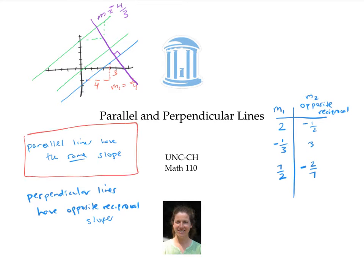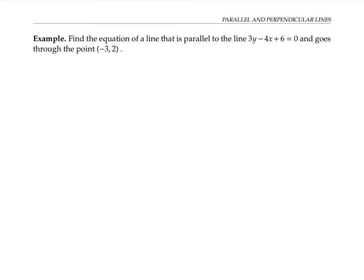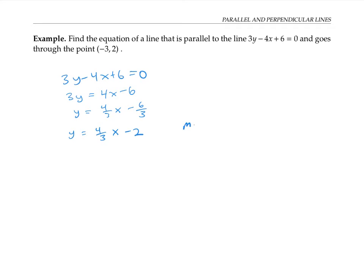Let's use these two principles in some examples. In our first example, we need to find the equation of a line that's parallel to a given line and goes through the point negative three, two. To get started, I need to figure out the slope of this line, so let me put it into slope intercept form. Starting with 3y − 4x + 6 = 0, I'll solve for y: 3y = 4x − 6, then divide by three to get y = (4/3)x − 2. Now I can read off the slope: m₁ = four thirds, so my parallel line will also have slope four thirds.